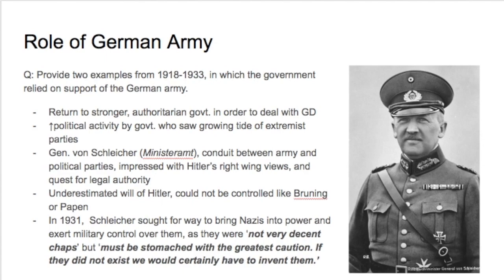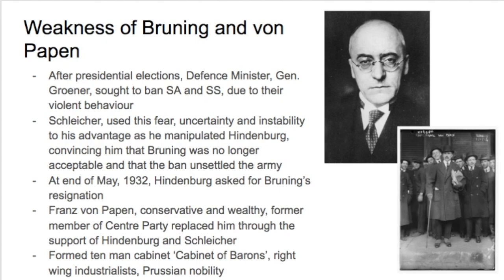After the presidential elections, Defence Minister General Groener sought to ban the SA and SS due to their violent behaviour on the streets, especially during election times. Schleicher used fear, uncertainty, and instability to his advantage, manipulating Hindenburg and convincing him that Brüning was no longer acceptable and that the ban unsettled the army. At the end of May 1932, Hindenburg asked for Brüning's resignation. As a result, the chancellorship shifted to Franz von Papen, who formed a ten-man cabinet of barons — right-wing industrialists — who didn't connect with the lower middle-income majority of Germans.